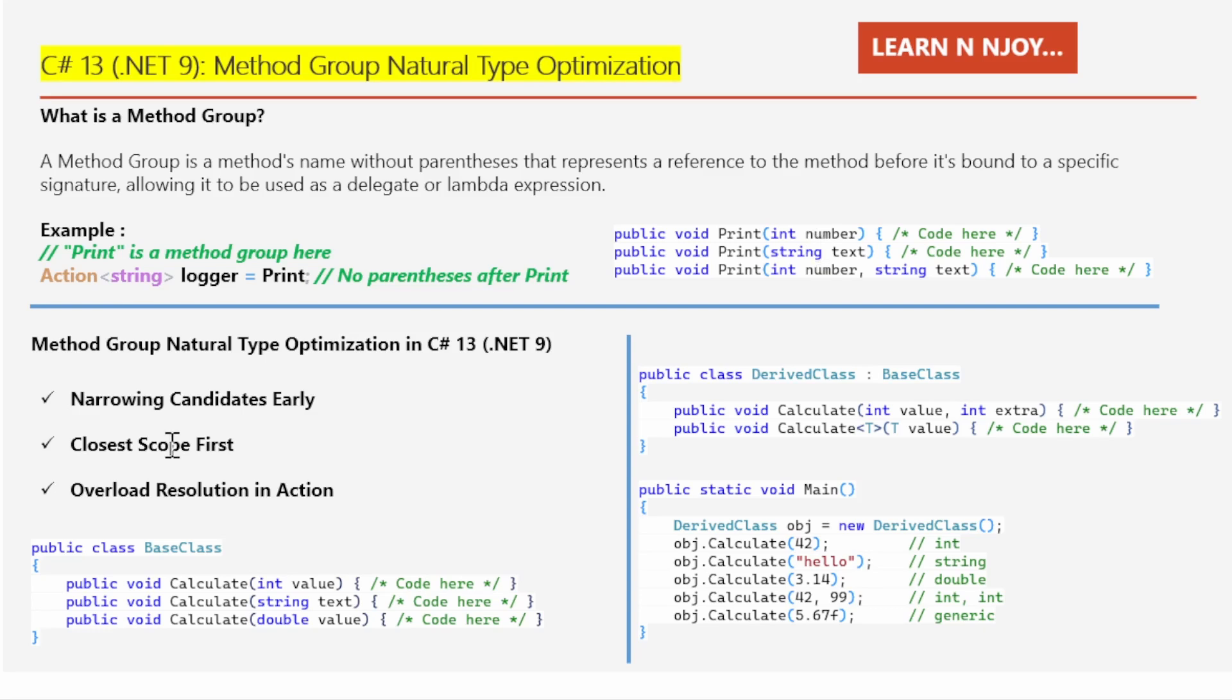So what's changed in C# 13? Now before C# 13, the compiler was not as efficient in choosing the right method from a method group.